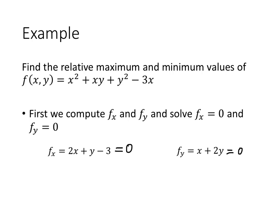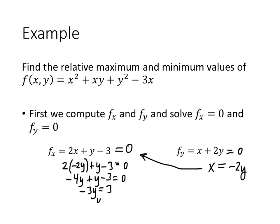Now we have a system of two equations and two variables. We solve this using substitution. Taking the second equation and solving for x, we get x equals negative 2y. Substituting into the other equation gives 2 times negative 2y plus y minus 3 equals zero. This gives negative 4y plus y minus 3 equals zero, so negative 3y equals 3, and y equals negative 1.